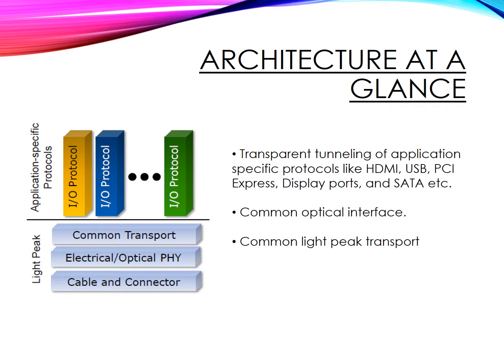This is the architecture of the Light Peak technology. The lower level architecture is the Light Peak system that consists of the optical physical layer, connectors, cables, and the common transport medium providing packet switched multiplexing. All the routing is established at setup. The upper level of the architecture has the application-specific protocols like HDMI, USB, etc. Each protocol is independent of the other, providing performance isolation between them.